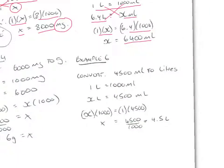Let's convert 4500 millilitres to litres. Using the rate: 1 litre equals 1000 millilitres, so x litres equals 4500 millilitres. Cross-multiplying, x times 1000 equals 1 times 4500. Dividing both sides by 1000, x equals 4.5 litres. So 4500 millilitres is the same as 4.5 litres.